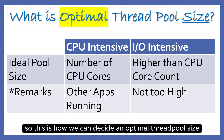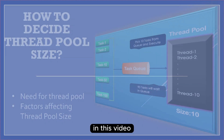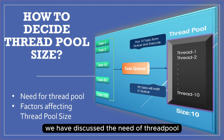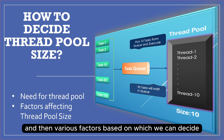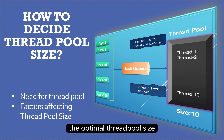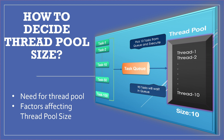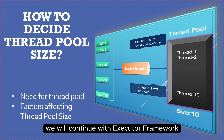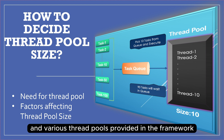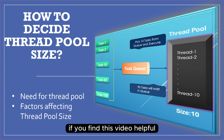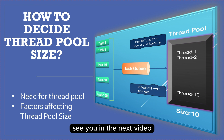So this is how we can decide an optimal thread pool size. In this video we discussed the need for thread pools and the various factors based on which we can decide the optimal thread pool size. In the next video we will continue with the executor framework and the various thread pools provided in the framework. If you find this video helpful, please don't forget to like, share, and subscribe. See you in the next video — till then, happy coding.